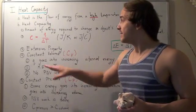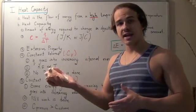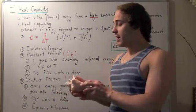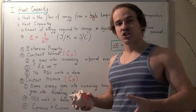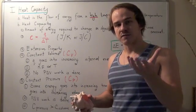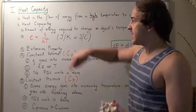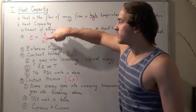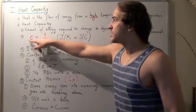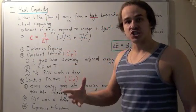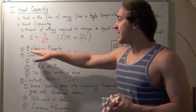Heat capacity is an extensive property. That simply means if we have some object — the seashell in this hand — and a second object, a seashell twice the size of this one, the amount of energy required to change the largest seashell's temperature by 5 degrees Celsius will be twice as large. And that means if Q is twice as large for the same change in temperature, the C will be larger as well. So heat capacity changes with a change in size of our system.